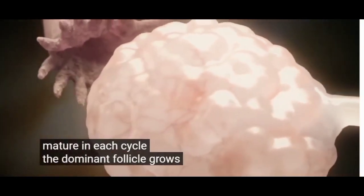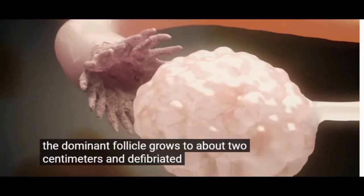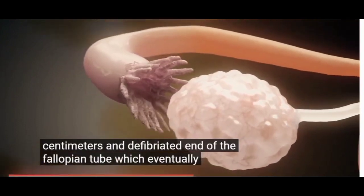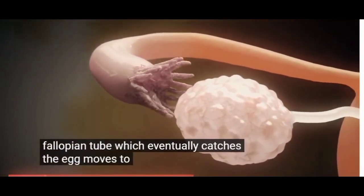The dominant follicle grows to about two centimeters and the fimbriated end of the fallopian tube, which eventually catches the egg, moves to the site of ovulation.